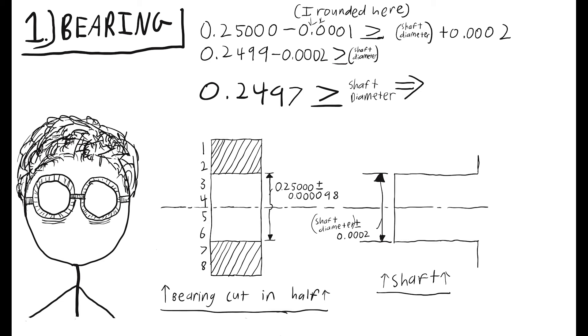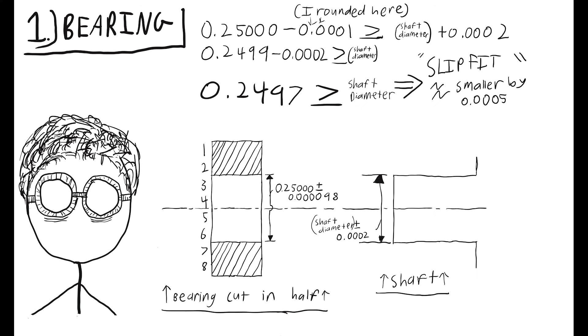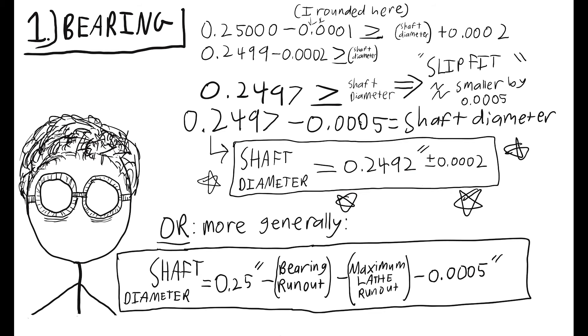We have found the largest possible diameter shaft that our bearing can be guaranteed to fit around. However, given that we don't want to have to apply our bearings with sledgehammers, it's time we use the relatively unknown fact that a slip fit is basically equal to a diameter difference of about 0.0005 inches. So we subtract that off.